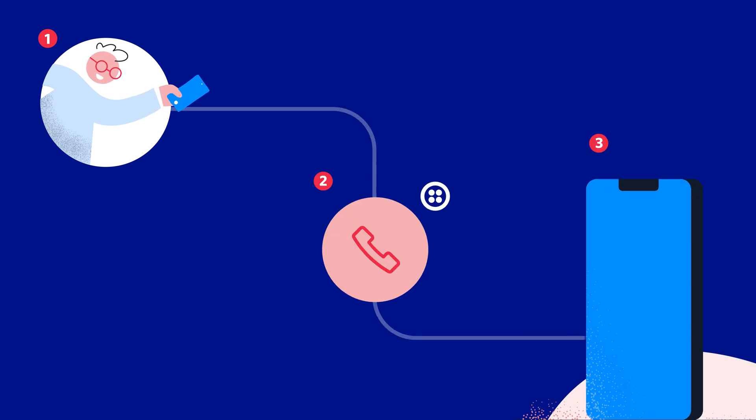For this call forwarding project, we'll need a Twilio account, a Twilio phone number, and a personal phone number to experiment with. When the call comes into our Twilio number, a function called forward call will accept the incoming call and then dial the new phone number. Great, let's get started.